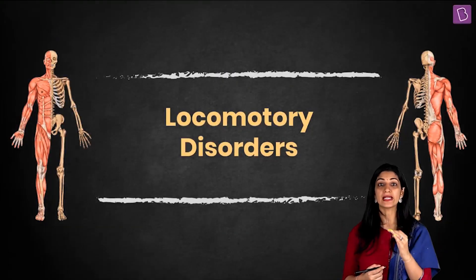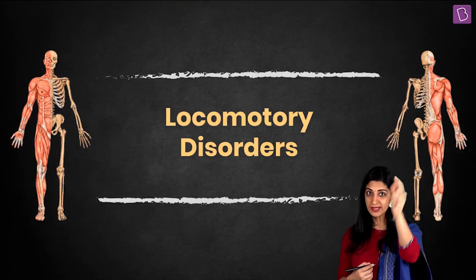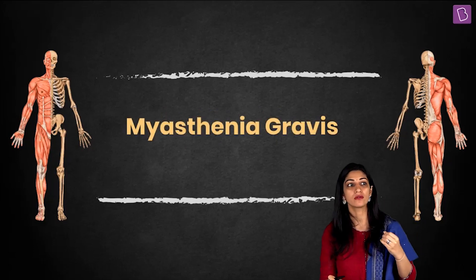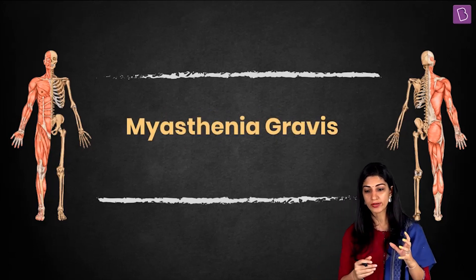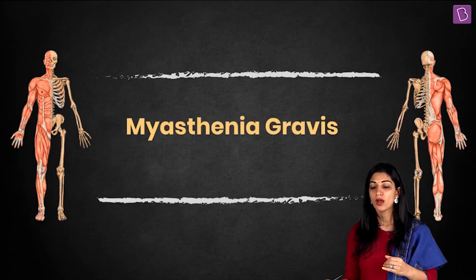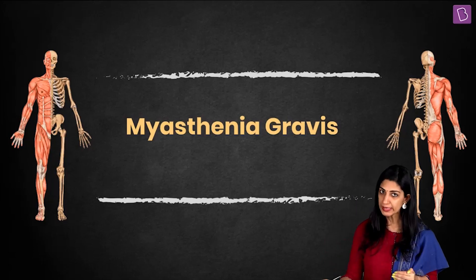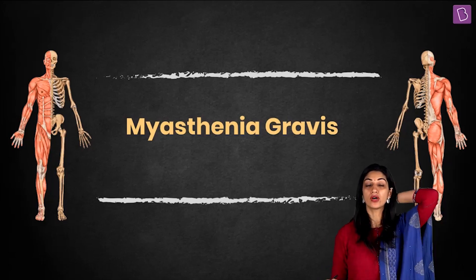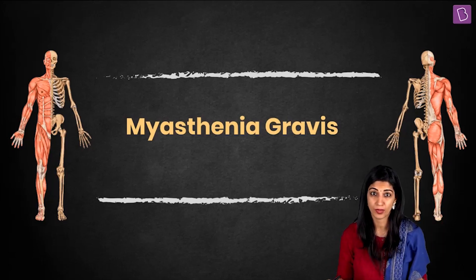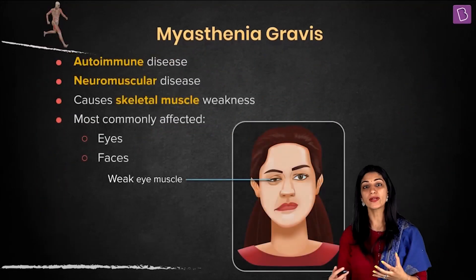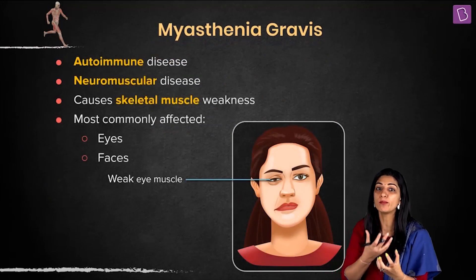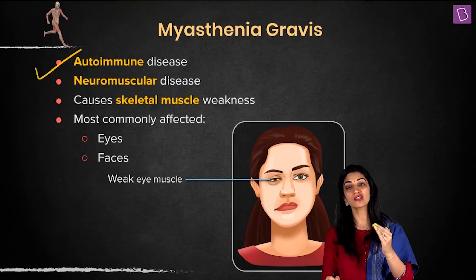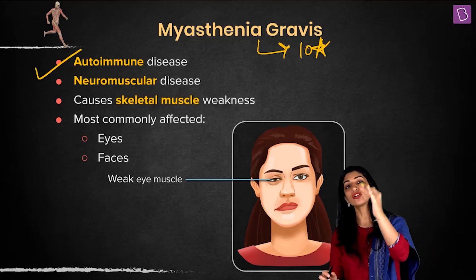It is time to study locomotory disorders — we will imagine ourselves to be physicians. There are many disorders, and among all locomotory disorders, children's locomotory disorders have a wide range. At the class 11 level, you will study only the most important ones. The first, which carries a lot of weight, is myasthenia gravis. It is a disease caused by our own body — there is no outside source — hence it is an autoimmune disease. This is a common exam question.